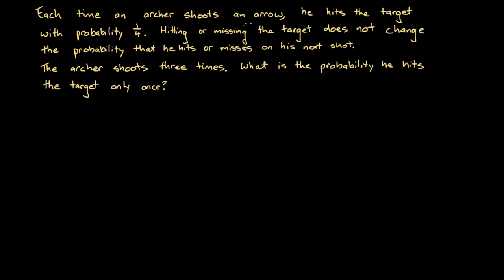Each time an archer shoots an arrow, he hits the target with probability 1/4, or one quarter. Hitting or missing the target does not change the probability that he hits or misses on his next shot. The archer shoots three times. What is the probability he hits the target only once?